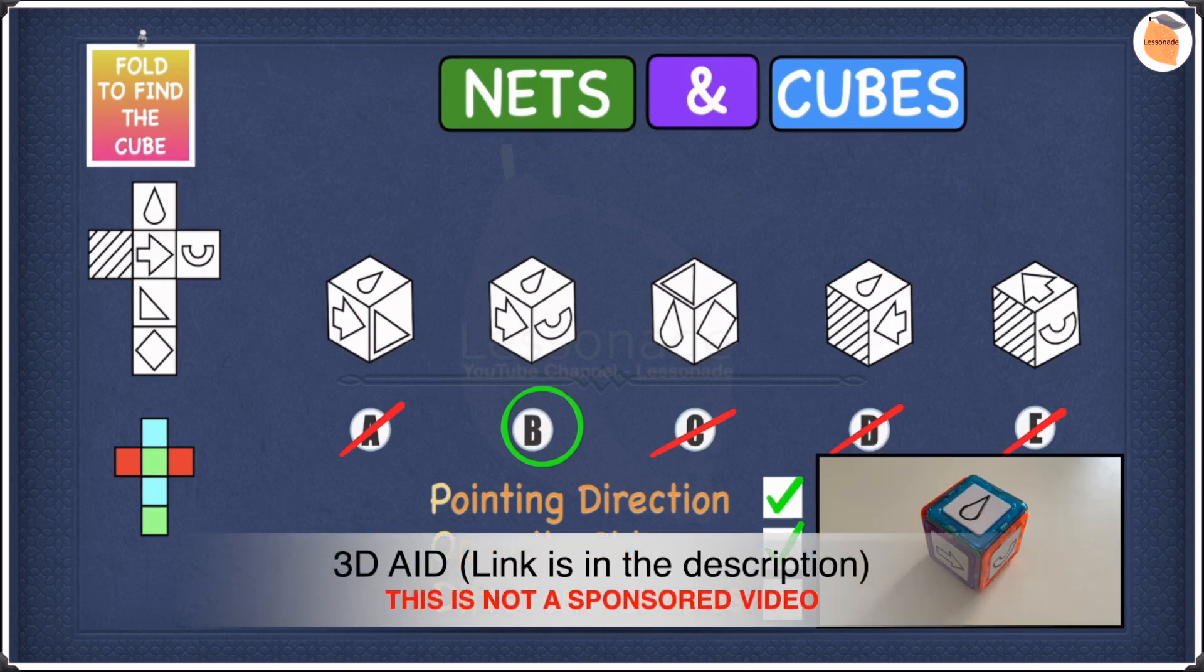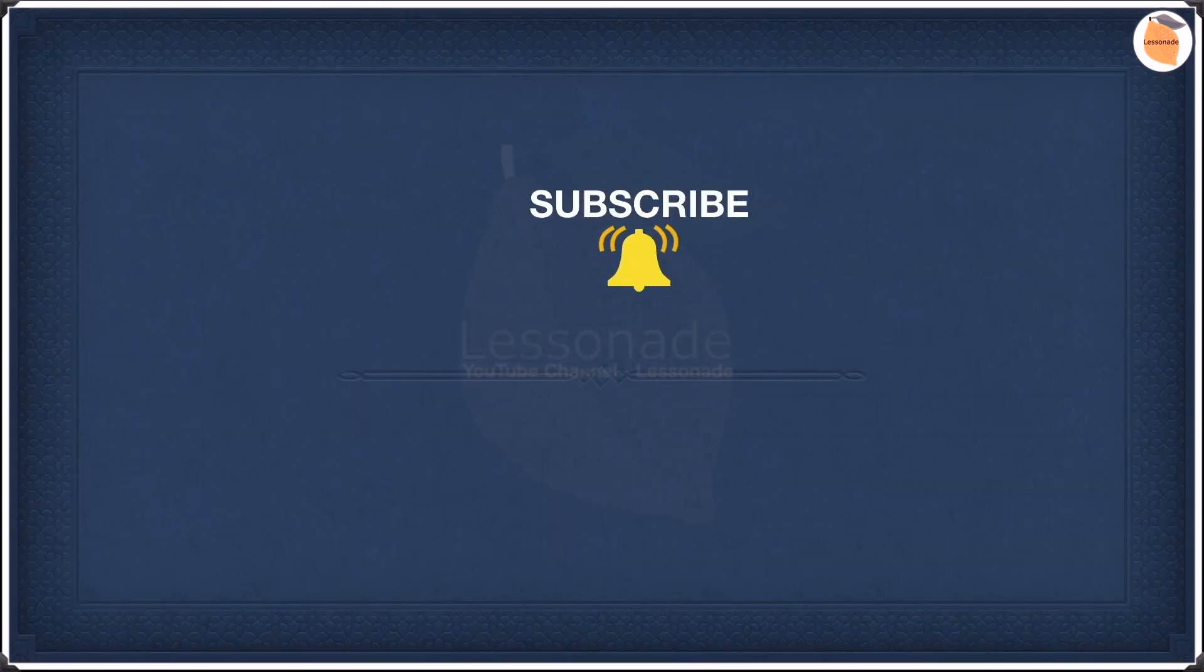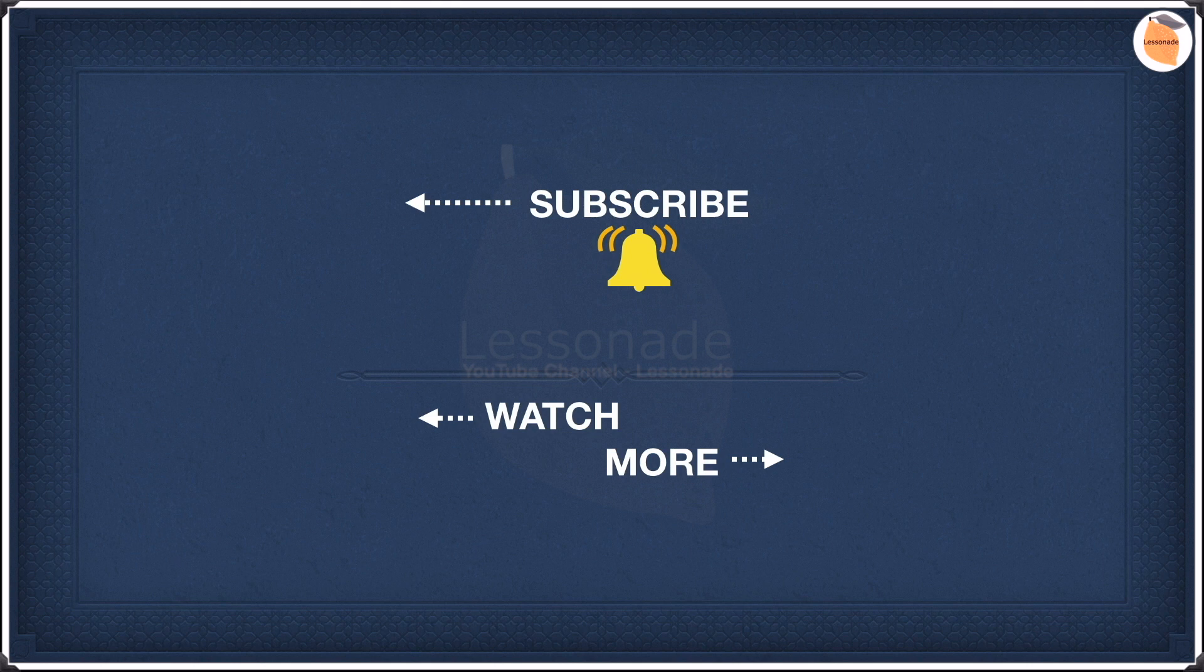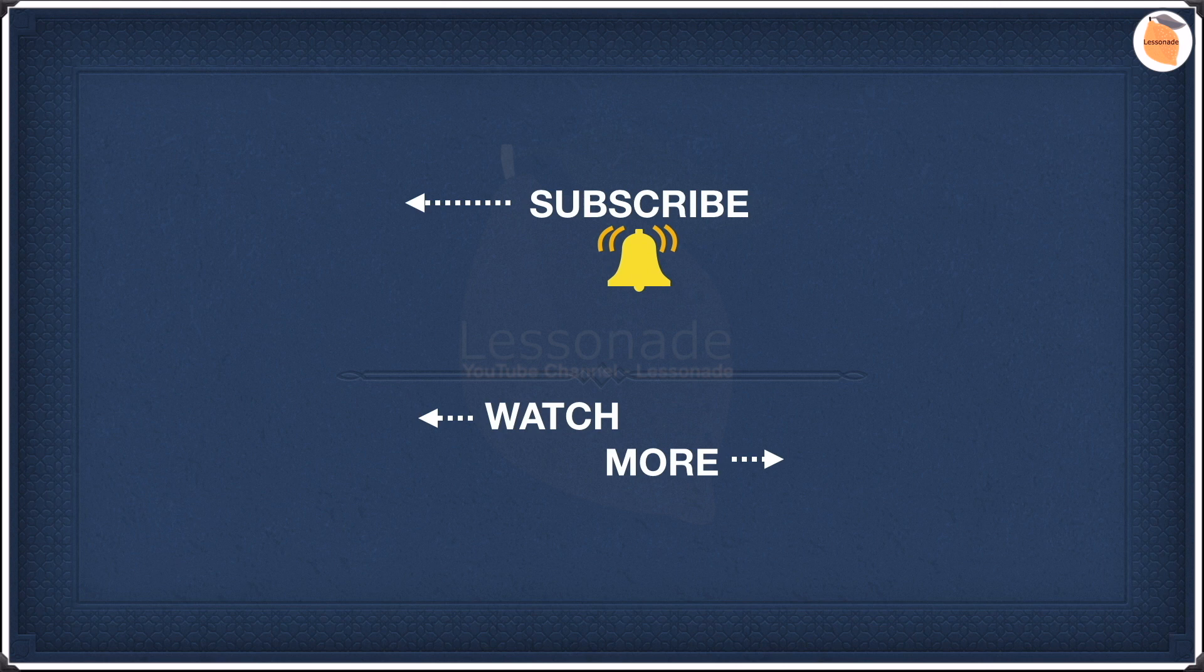This is an aid for constructing the cube to gain a better understanding of how the net folds in a far more effective way. So the link's in the description below and in the comments section, so go check that out. Now to learn more non-verbal reasoning types, click the video on the right, and to learn the previous type, click the video on the left. Thank you so much for watching, please subscribe to my channel. I'll see you next time.